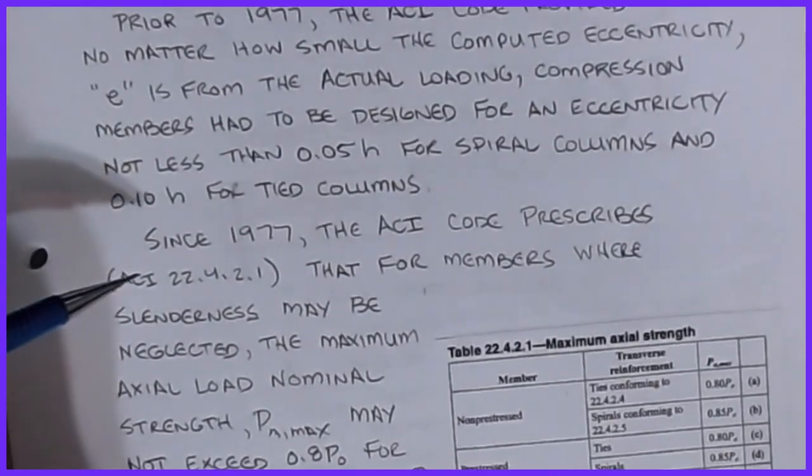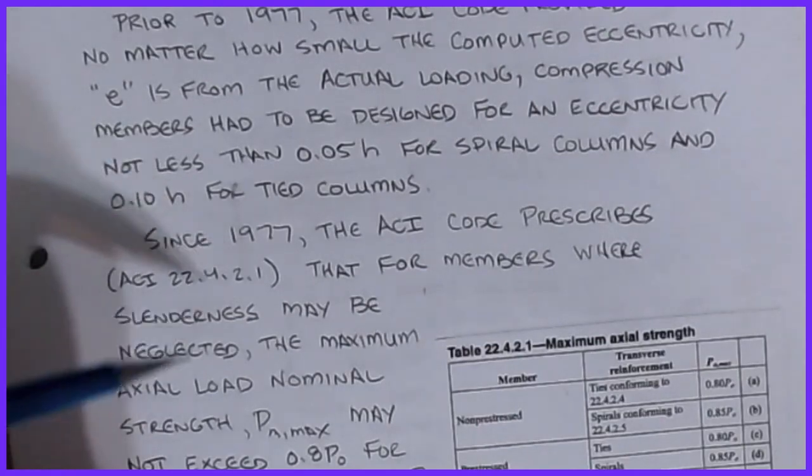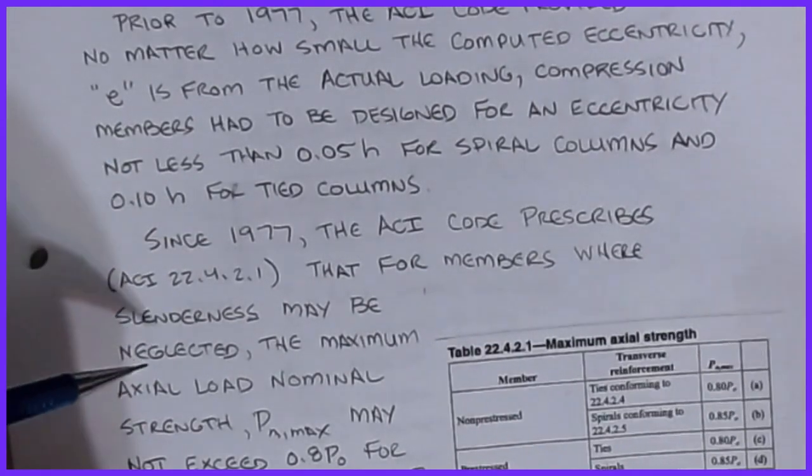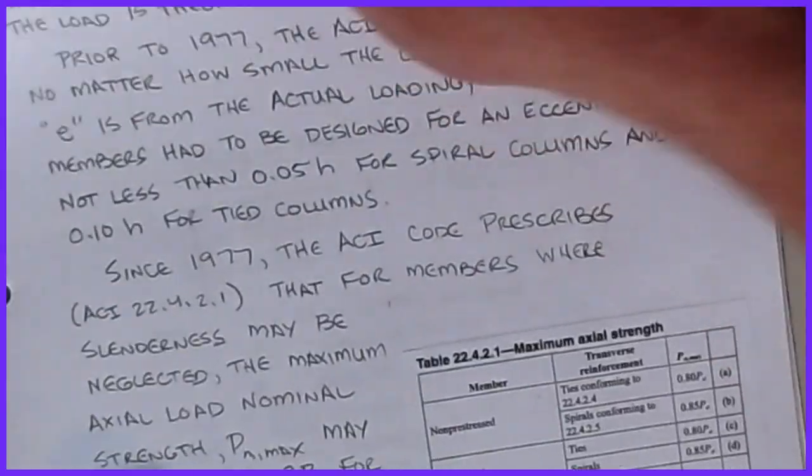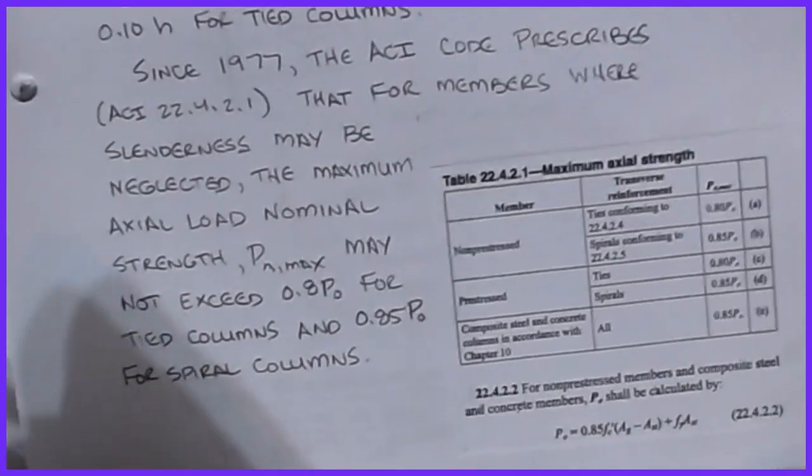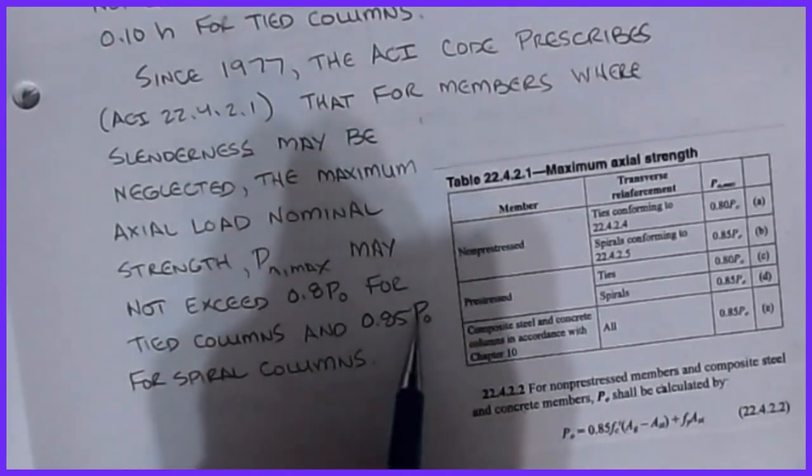Different codes require different amounts, and the ASCE 7, the minimum design loads document, even talks about a minimum eccentricity in there that we should be considering. Since 1977, the ACI code has prescribed—and this is section 22.4.2.1—that for members where slenderness may be neglected, the maximum axial load, the nominal strength, may not exceed 0.8P₀ for tied columns and 0.85P₀ for spiral columns.